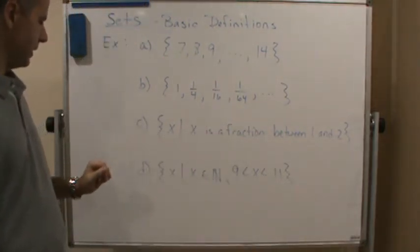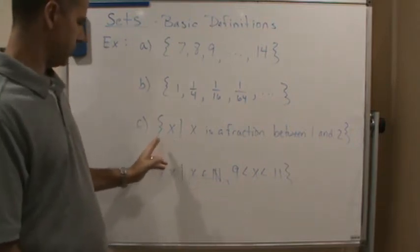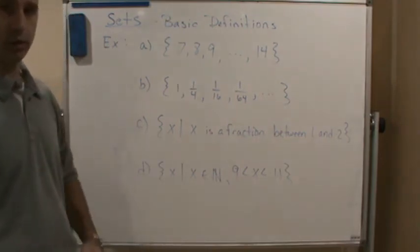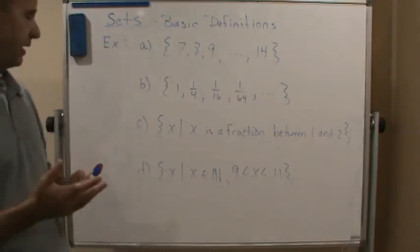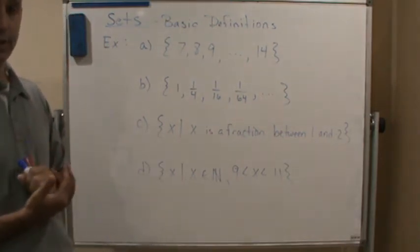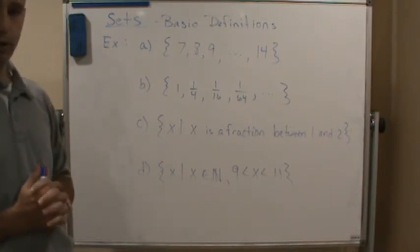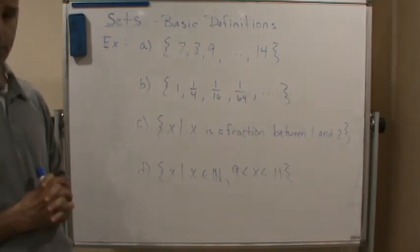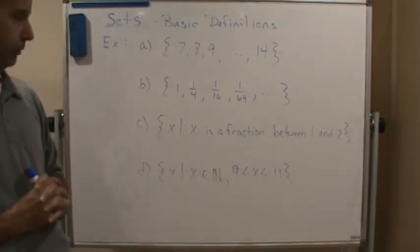C, set-builder notation. It says the set of all x such that x is a fraction between one and two. We have to ask ourselves, how many fractions exist between one and two? The answer is infinite. There's an infinite number of fractions between one and two.